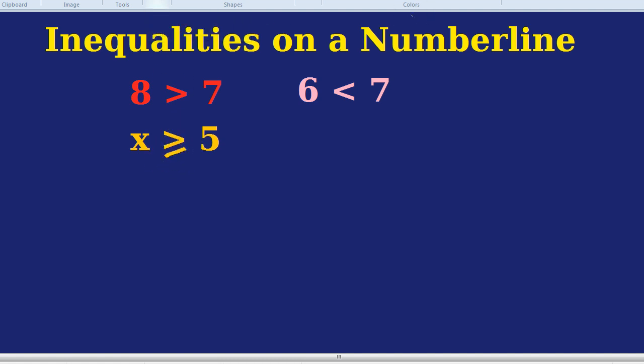You can almost see the little equals if you look closely. We would have the line underneath, and the line underneath. It's almost like a little equals. So x is greater than or equal to 5.